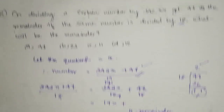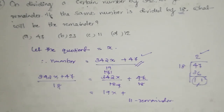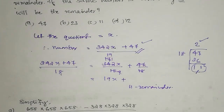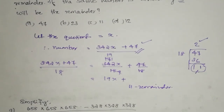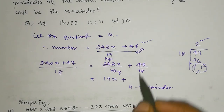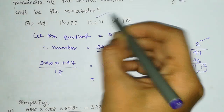So, 11 is the remainder. 11 is the remainder. Option number C is correct.